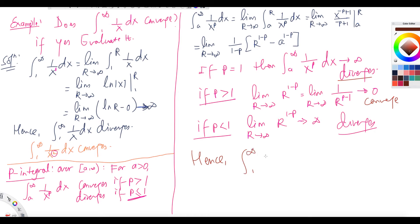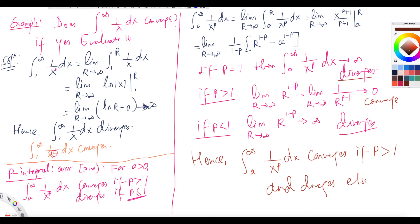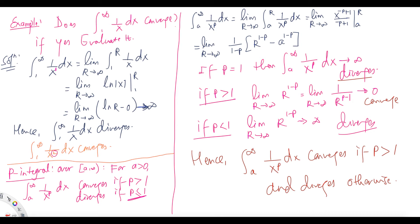Hence, the integral from a to infinity of 1 over x to the p dx converges if p is greater than 1, and diverges otherwise — meaning for all other values of p. That completes the proof of the p-integral formula.